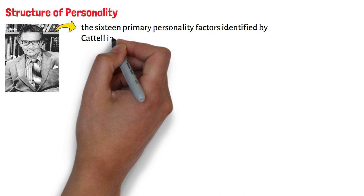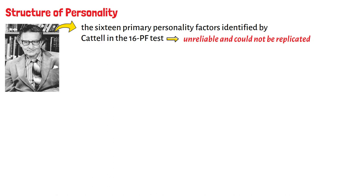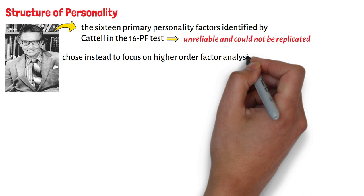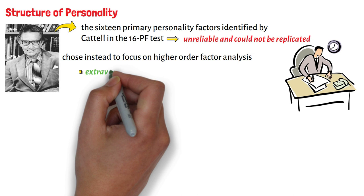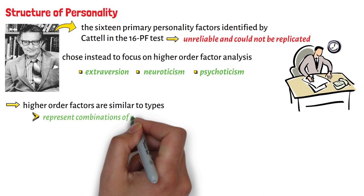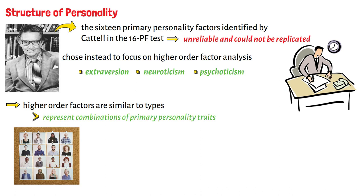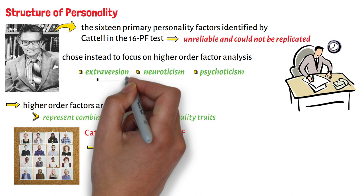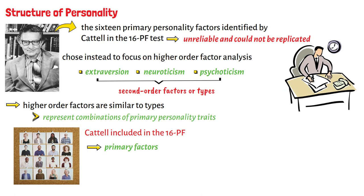Structure of Personality. According to Eysenck, the 16 primary personality factors identified by Cattell in the 16-PF test were unreliable and could not be replicated. Eysenck chose instead to focus on higher-order factor analysis, and through his work he identified three superfactors: extroversion, neuroticism, and psychoticism. Higher-order factors are similar to types and represent combinations of primary personality traits, whereas extroversion, neuroticism, and psychoticism were second-order factors or types.